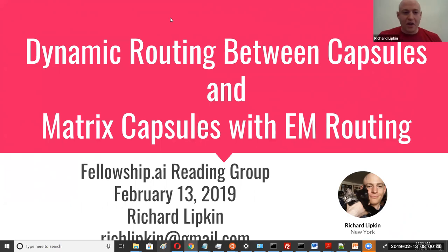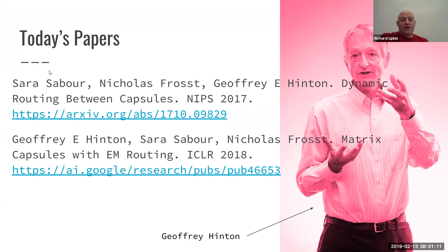My name is Richard Lipkin. I'm in the New York cohort for Fellowship AI. The presentation today is on dynamic routing between capsules and matrix capsules with EM routing, which are two descriptions of the architecture of CNNs by Jeffrey Hinton, Sara Sabour, and Nicholas Frosst. They have just a different type of capsules and a different type of routing in the two papers.